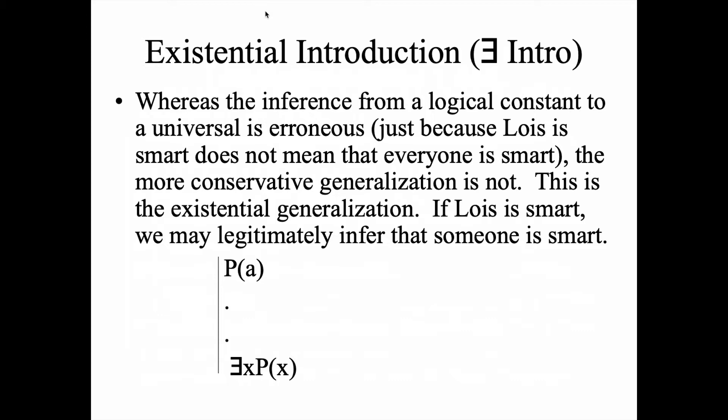The two rules for the existential — the intro and the elimination — are next. Existential intro is, like universal elimination, a pretty natural-feeling rule. Think about it this way: you can make a restricted generalization. If it's true that Mia is talking right now, it follows that someone is talking. It wouldn't feel natural to infer from 'Mia is talking' that 'everyone is talking,' but the restricted generalization to the existential does make sense: if Mia is speaking, it follows that someone is. So that's your existential intro rule — we move from a constant to the existential.